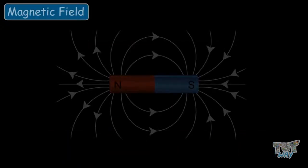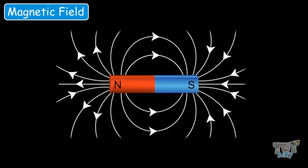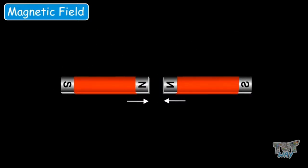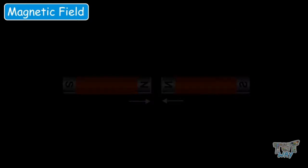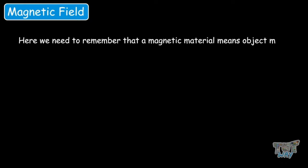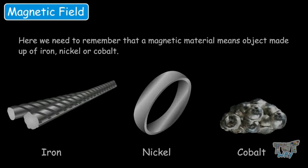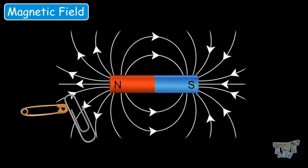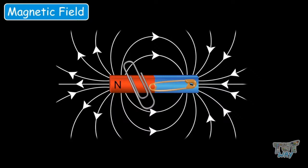Now let's learn about the magnetic field of a magnet — that is, the space around the magnet in which a magnetic material or another magnet can experience a magnetic force, as in attraction or repulsion. A magnetic material is an object made up of iron, nickel or cobalt. When a magnetic material comes into contact with the magnetic field of a magnet, it is attracted towards the magnet — towards both poles, not just one.